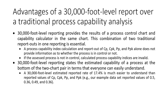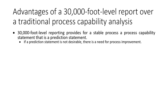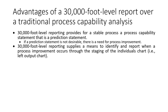30,000-foot-level reporting states the capability of the process simultaneously in the two-chart pair in terms that everyone can easily understand. A 17.4% non-conformance rate estimate is much easier to understand than the values of CPK and so on. This reporting also provides a stable process prediction statement — a capability statement everyone can easily understand — and if it's not desirable, there's a need to improve the process. 30,000-foot-level reporting supplies a means to identify and report when an improvement occurs through the staging of an individuals chart.